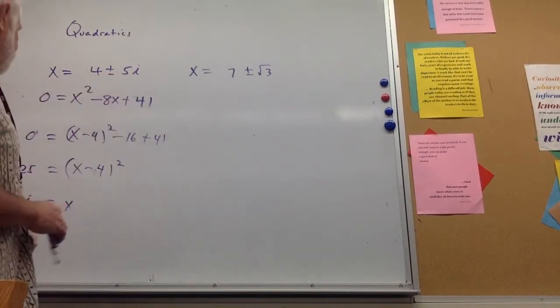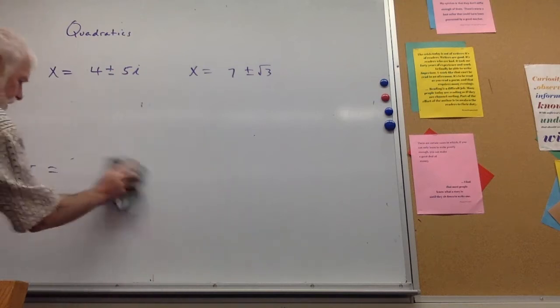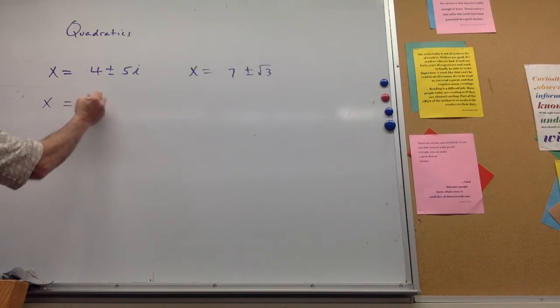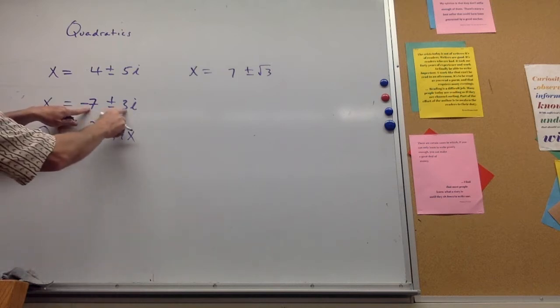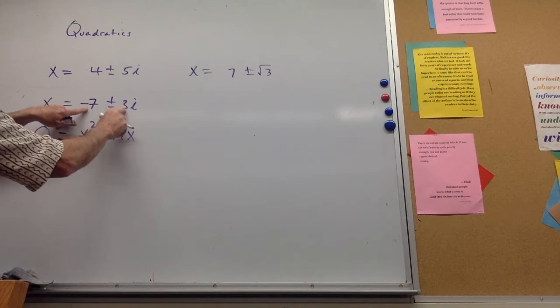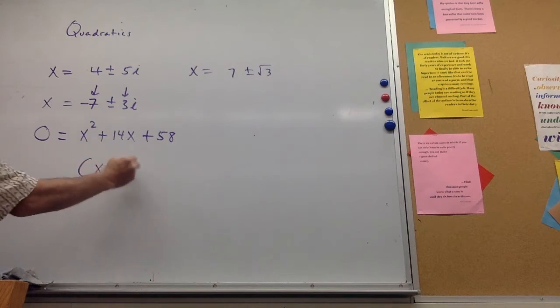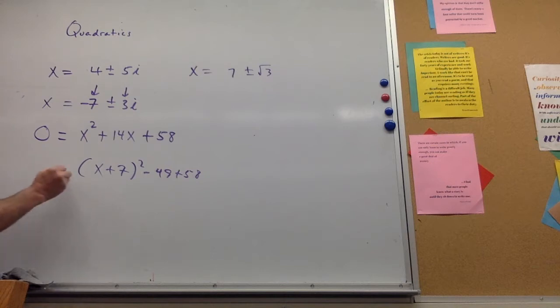You got to be careful when you do a non-i situation because these i's get you a sign change. Let me do another one over here just to make sure I explain that. I'm trying to get a bunch of videos done before I lose the classroom. Let's say that x = 7 ± 3i. So slow it down a little bit. 0 = x² - 7, so if that's -7, then it's going to be +14x. And now squaring 7 is 49, squaring 3 is 9. 49 and 9 is 58.